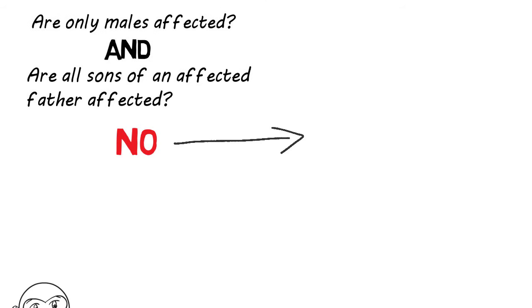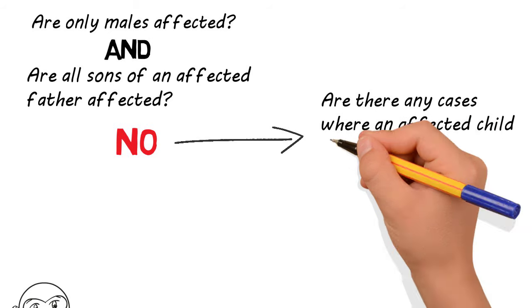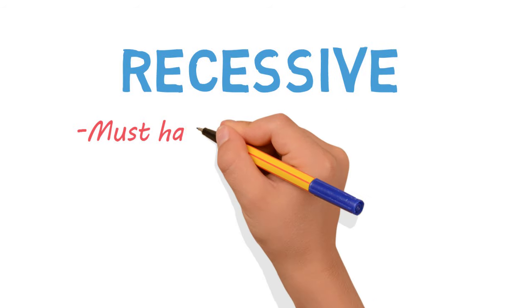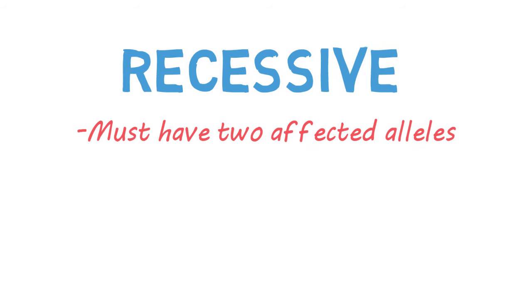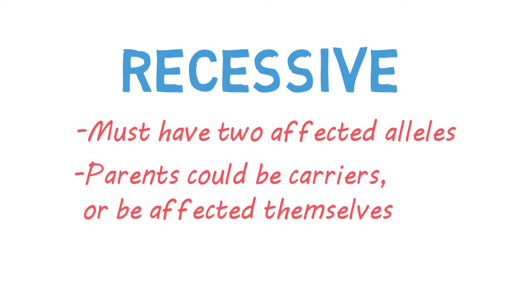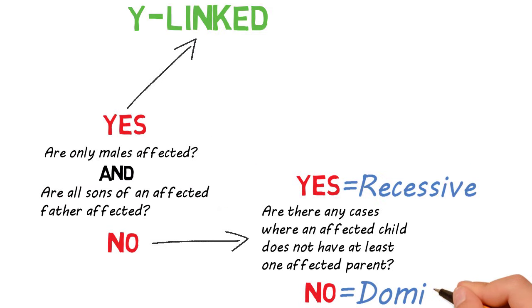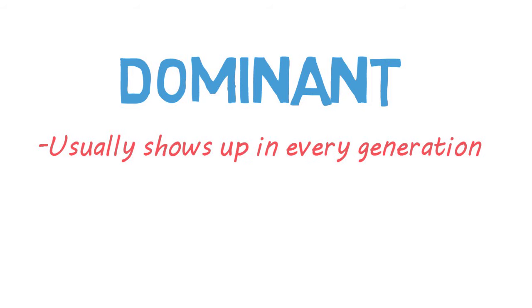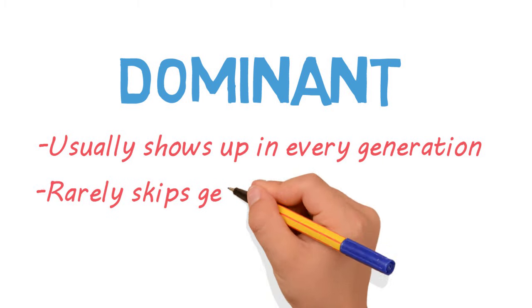If the answer is no to those first questions, we ask: are there any cases where affected children do not have at least one affected parent? If yes, then it's recessive, though we don't know what type yet. Being recessive, they must have two affected alleles to express the disorder, so an affected child can have unaffected parents because both parents can be carriers. However, it's also possible that the parents could still be affected. If the answer is no, then it is a dominant disorder — an affected child must have an affected parent. Dominant patterns usually see someone affected in every generation, and once you see an affected parent, it typically appears in every generation thereafter. It doesn't skip generations.